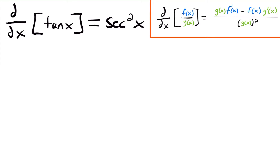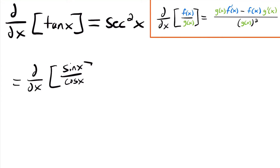One cool thing about the quotient rule is that we can use it to prove some of our derivative rules for trig functions. In the past I just told you that the derivative of tangent x was secant squared x, but didn't explain why. Now we can, because tangent x equals sine x divided by cosine x. So we can write this as the derivative of sine x divided by cosine x — now we have a quotient.